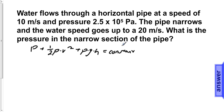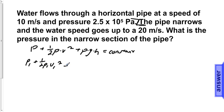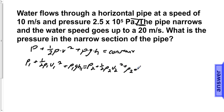Because this equation for Bernoulli's principle is equal to a constant, we can say that the value of the equation for the first section of the pipe will be exactly equal to the value of Bernoulli's equation for the second section of the pipe. When written out, this means P1 plus one-half rho V1 squared plus rho·g·H1 equals P2 plus one-half rho V2 squared plus rho·g·H2.